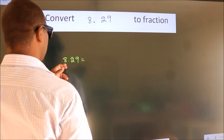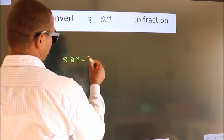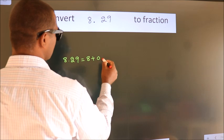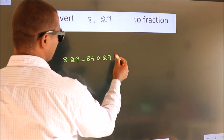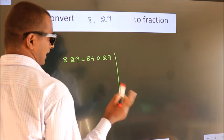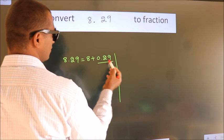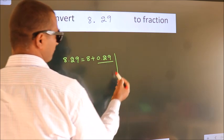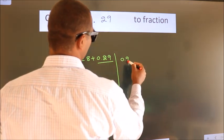First we should break this into 8 plus 0.29. Next, convert this to fraction over here. So 0.29.